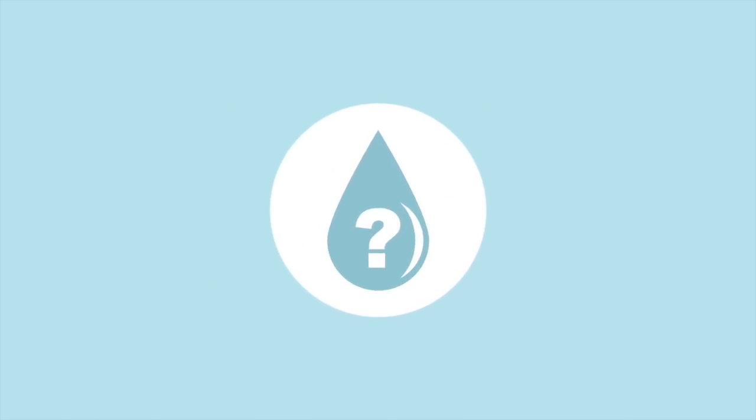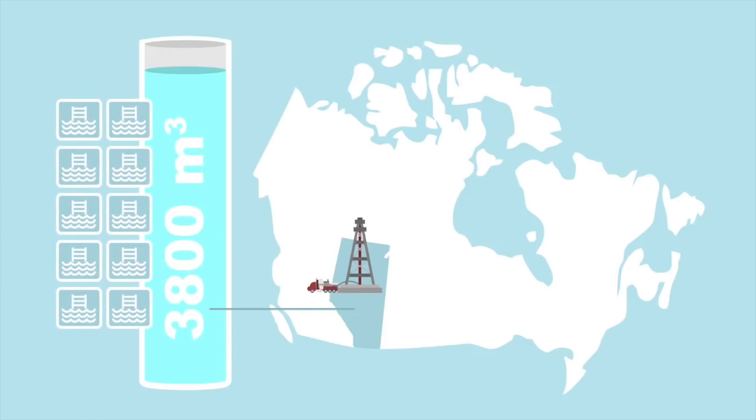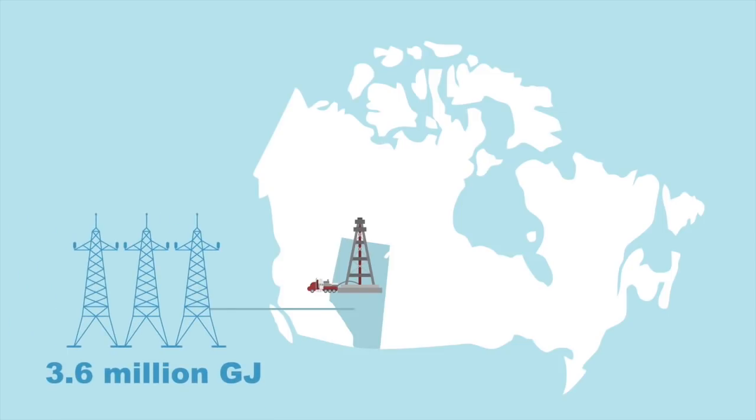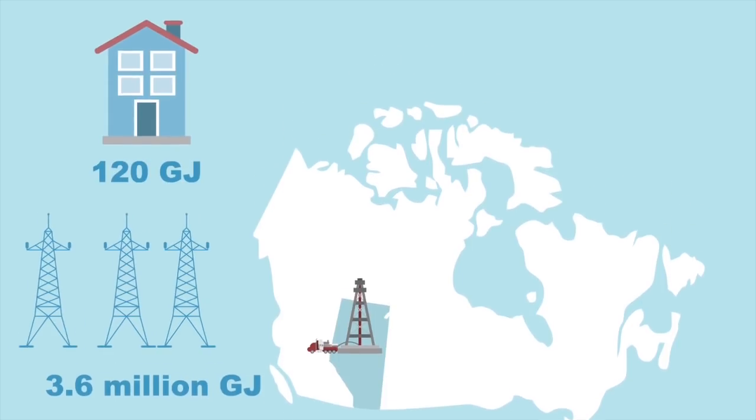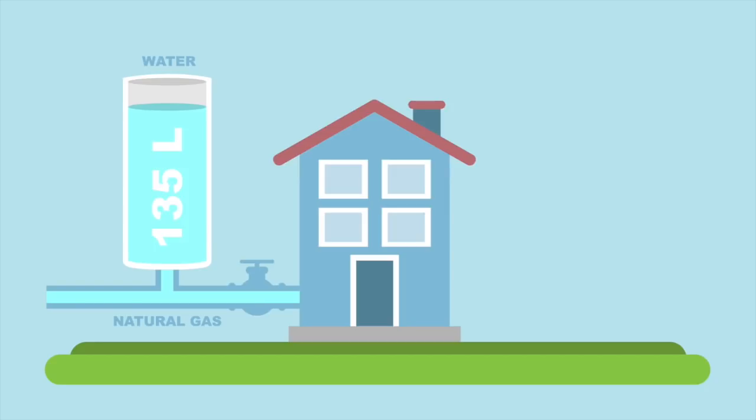So what about water use? A typical well fracked in Alberta uses 3,800 meters cubed of water, the equivalent of 10 Olympic-sized swimming pools and produces 3.6 million gigajoules of usable energy. As the average home requires 120 gigajoules, fracking allows you to heat your home for an entire year with natural gas using only 135 liters of water, the equivalent of a single 15-minute shower in the morning.